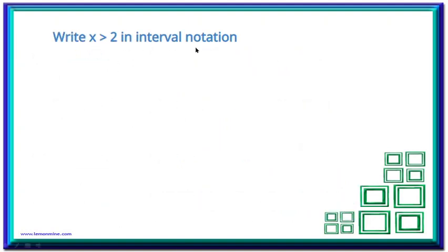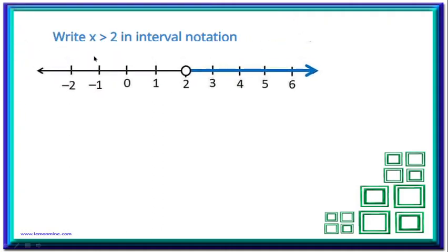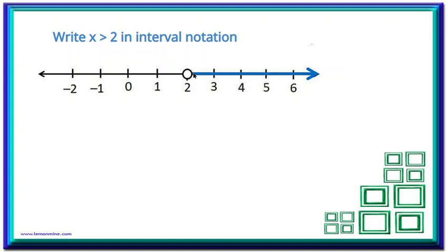Now, write x > 2 in interval notation. First, plot it on the number line. X is greater than 2 means all real numbers after 2 on the number line, but excluding 2. So I will put an open circle at 2. Since x goes from 2 to infinity, we write x ∈ (2, ∞) — both open brackets because 2 is excluded and infinity is excluded as infinity is not a number.